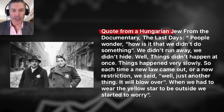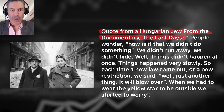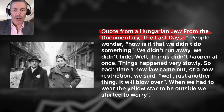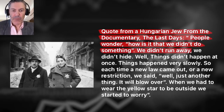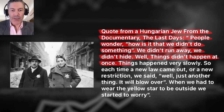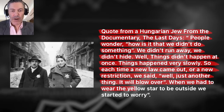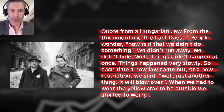How I would respond to your friend Fred or Conforming Karen is to give them a little history lesson on the dangers of government taking more and more power and taking away more and more of your freedoms. This is a quote from a Hungarian Jew from the documentary 'The Last Days' about Germany during the 1930s: 'People wonder, how is it that we didn't do something? Why didn't we run away? Why didn't we hide? Well, things didn't happen all at once. Things happened very slowly. So each time a new law came out, or a new restriction, we said, well, just another thing, it'll blow over. When we had to wear the yellow star to be outside, at that point we started to worry.' Whether it's a yellow star, a green star, or a red star — when government divides society, when they segregate society into different groups, when they make it illegal for businesses to serve certain groups, it never ends well.